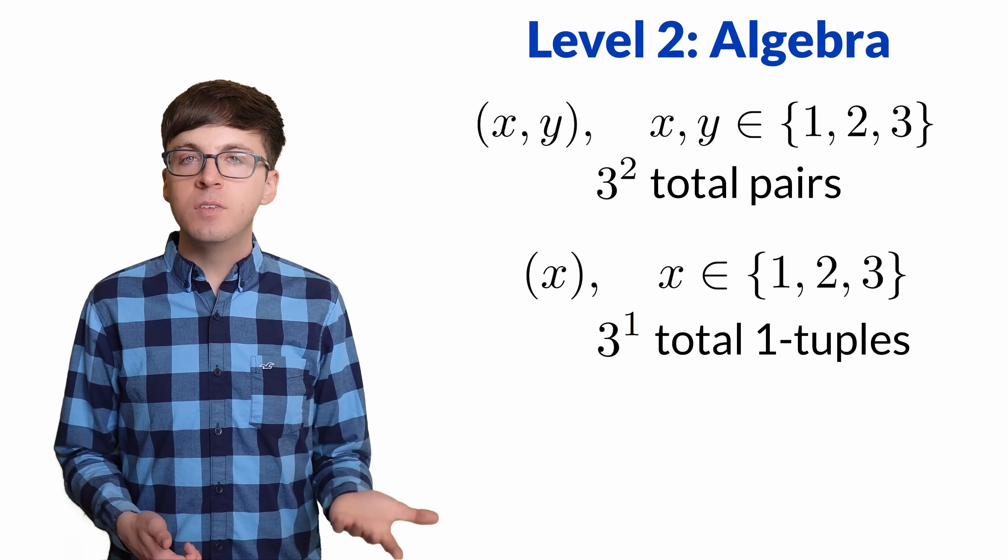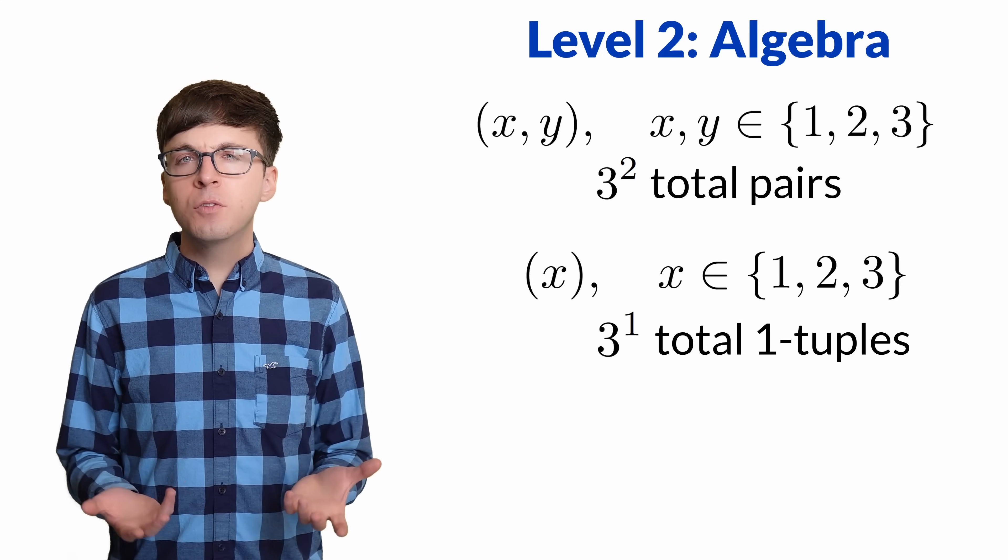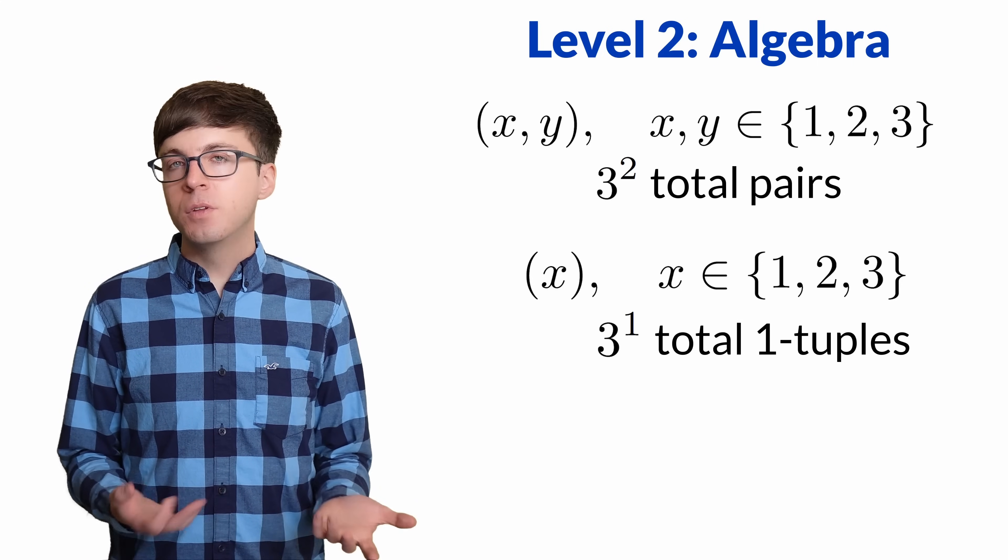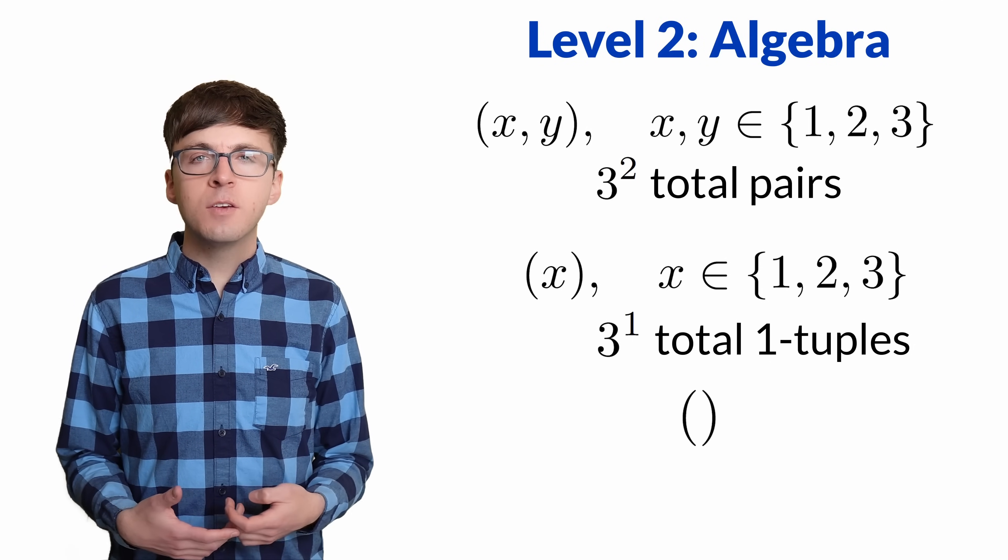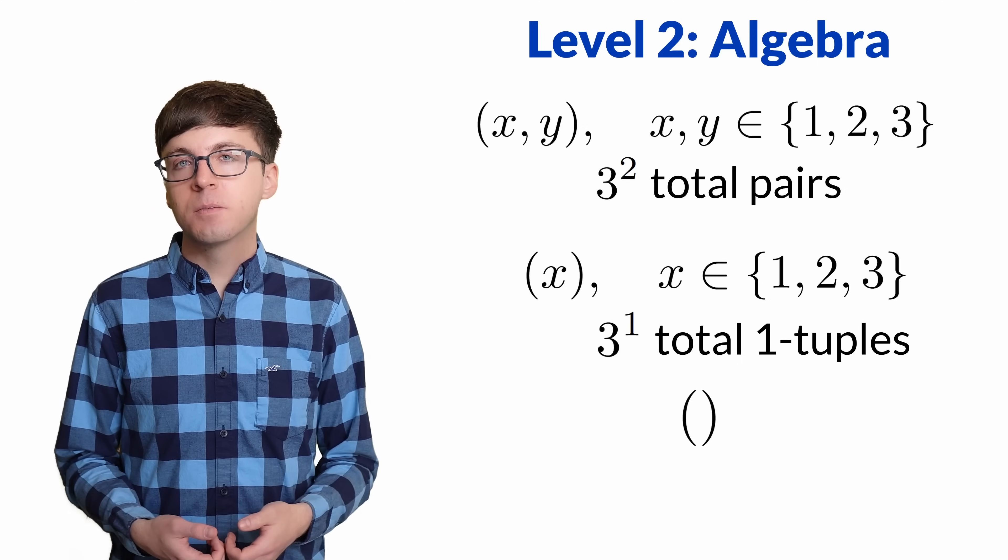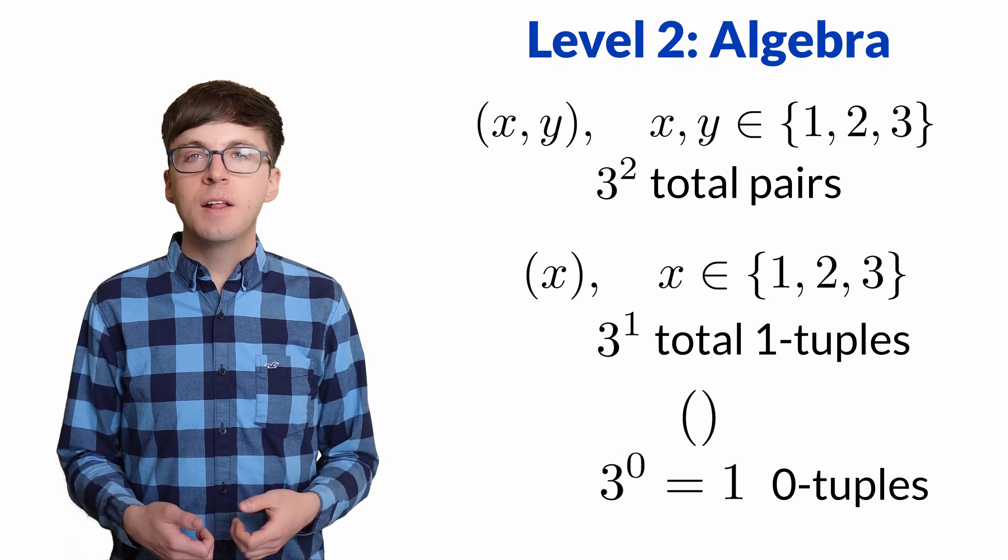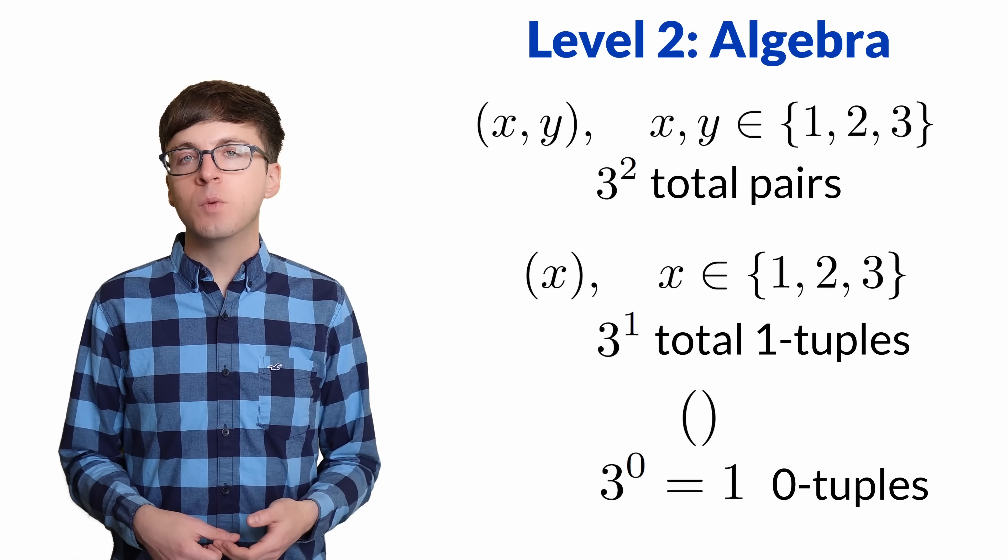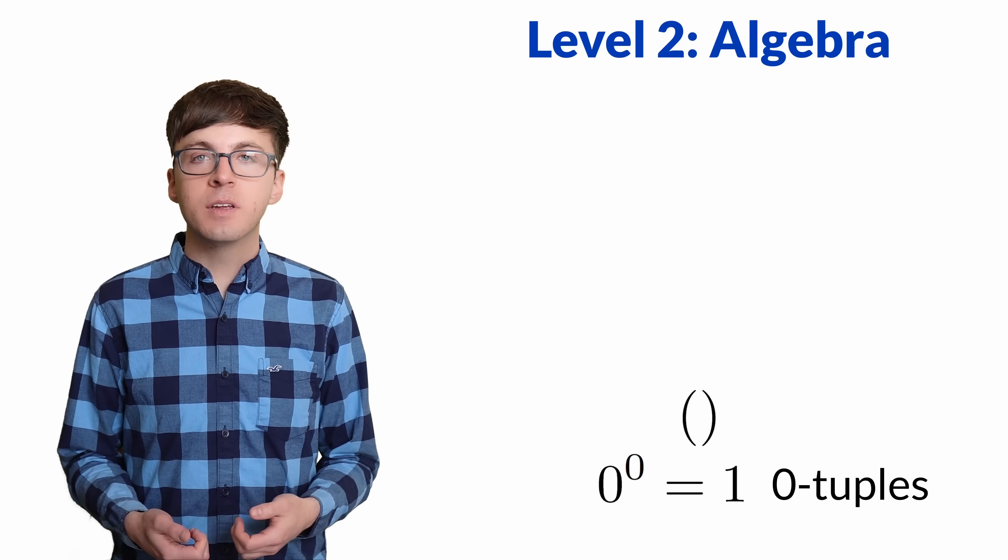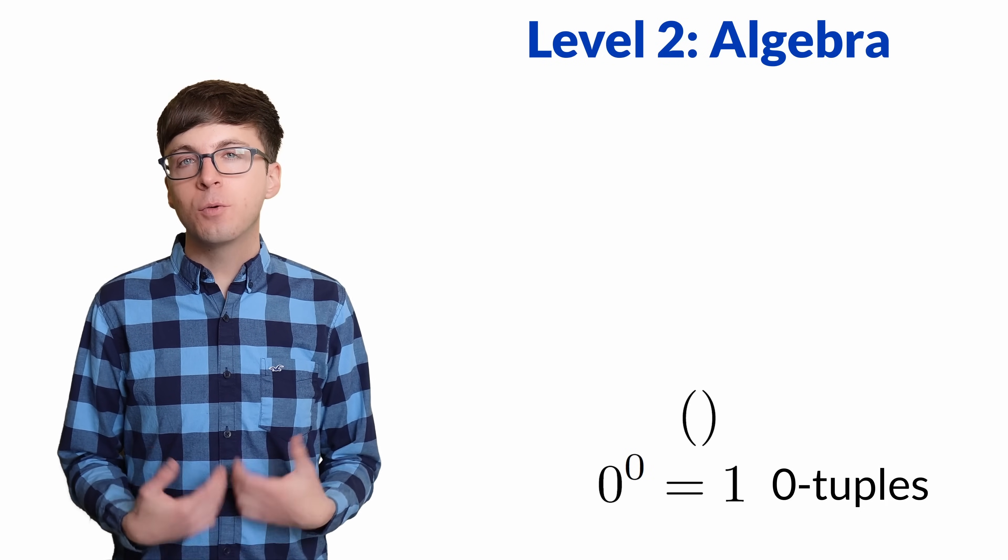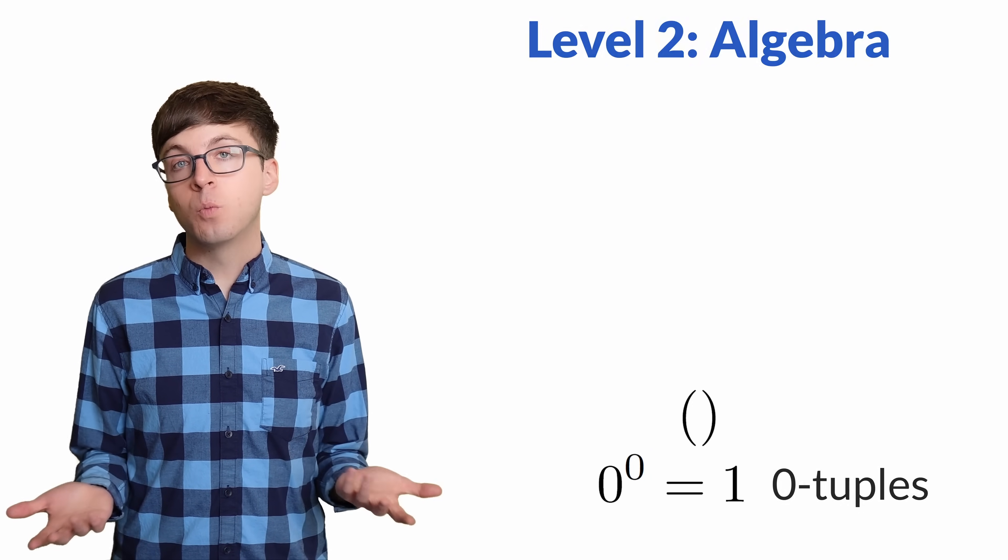So then what is 3 to the 0? This is the number of 0 tuples that we can make from the set 1, 2, 3. Since a 0 tuple has no elements, there's only one possibility, the empty tuple. Or in programming, you might think of this as an empty list. So 3 to the 0 power equals 1. Now what about 0 to the 0? This is the number of 0 tuples we can make from the empty set. There's still one possibility, the empty tuple. So in this context, it makes sense to define 0 to the 0 as 1.